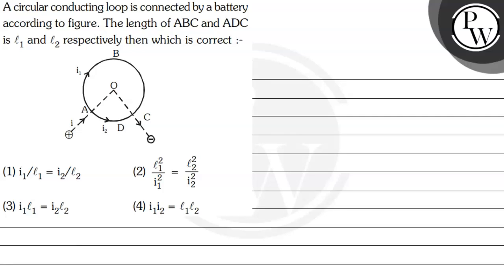Hello Machu, let us read the question first. A circular conducting loop is connected by a battery according to the figure. The length of ABC and ADC is L1 and L2 respectively.